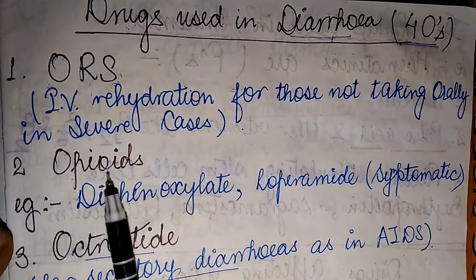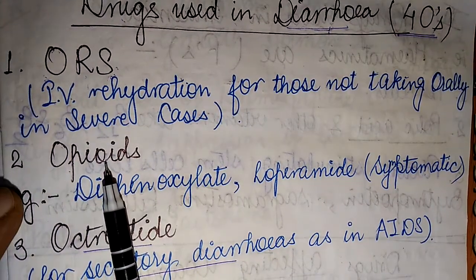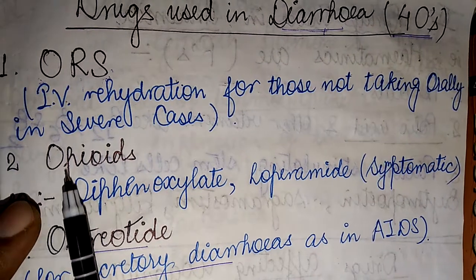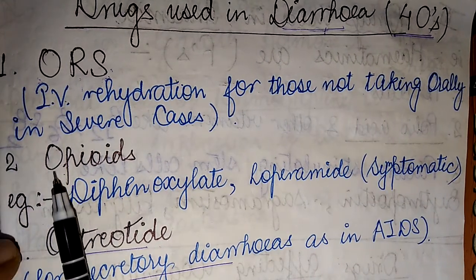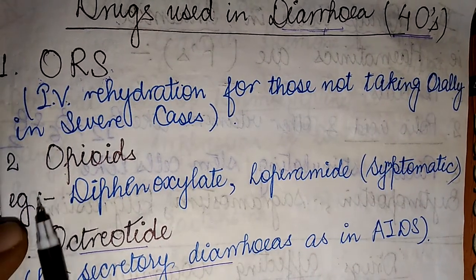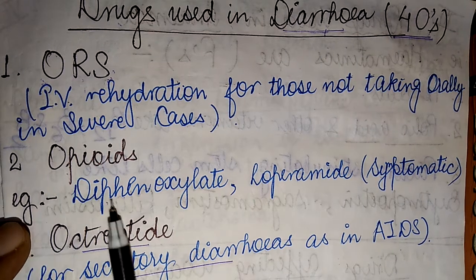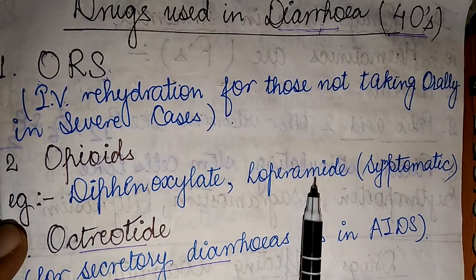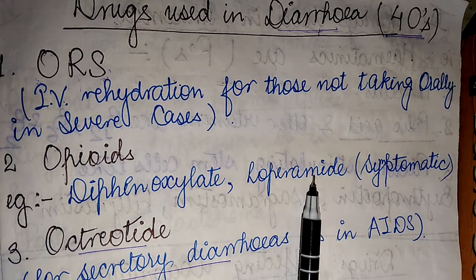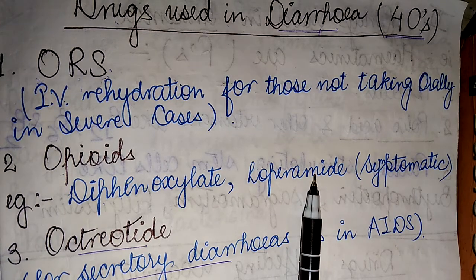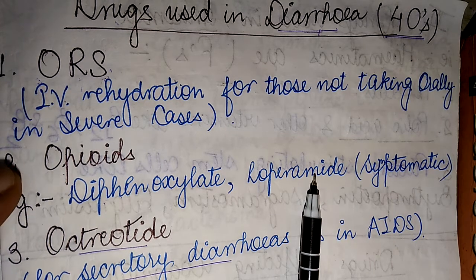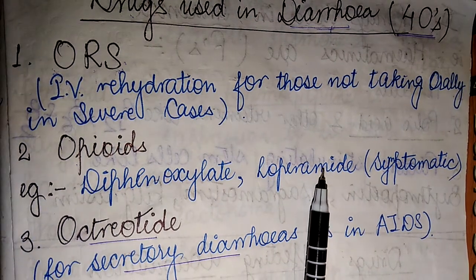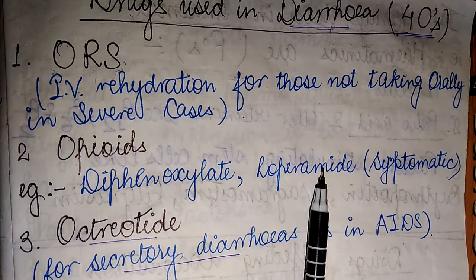The second O stands for opioids. The very famous examples of this category include diphenoxylate and loperamide. These two drugs are widely used from the opioids category, and loperamide is mostly used in symptomatic cases.